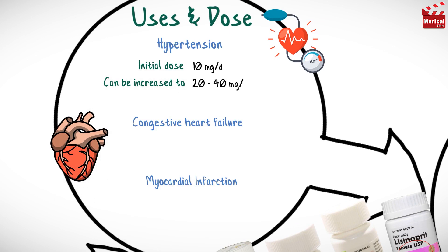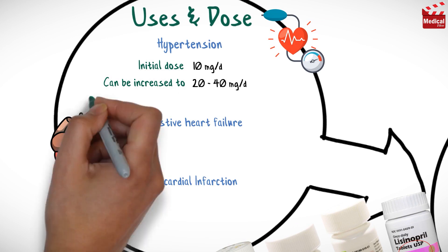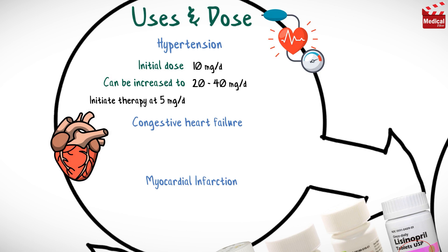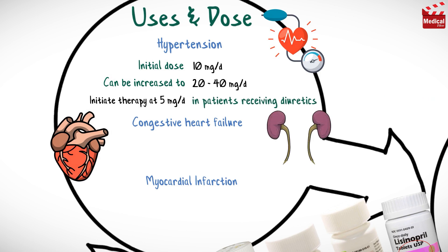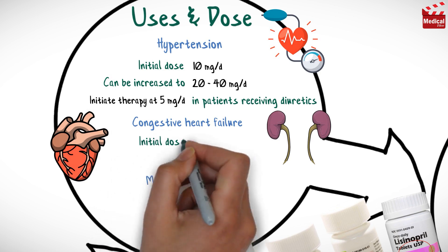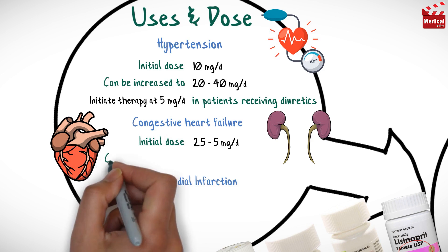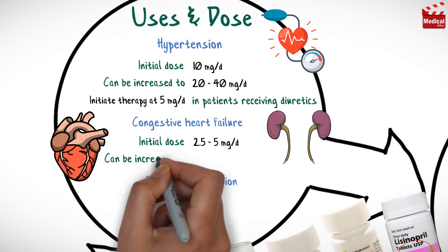The usual initial dose for hypertension is 10 milligrams per day, which can be increased to 20 to 40 milligrams once a day. Therapy should be initiated at 5 milligrams per day in patients receiving diuretics.